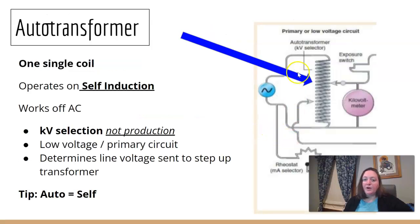Your auto transformer is the first transformer we hit. It has one coil. It operates on self-induction because it's lonely. It doesn't have any friends. It's a coil by itself. Again, it works off of alternating current. We are selecting our KV here, not producing it. Watch that word. So we're selecting our KV, and the kilovolt meter here is going to determine the voltage being sent up to the step up transformer. So I want you to think auto is self. It's also selecting my KV.